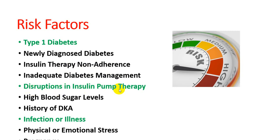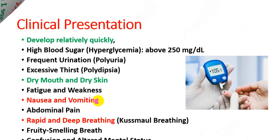Disruption in insulin pump therapy — if the pump is not properly used or insulin delivery fails — can cause DKA. High blood sugar levels also lead to this condition. A previous history of DKA increases the chance of recurrence. Infection or illness creates a stressful state with hormonal imbalance. Physiological or emotional stress also leads to DKA, as does pregnancy or gestational diabetes in female patients.